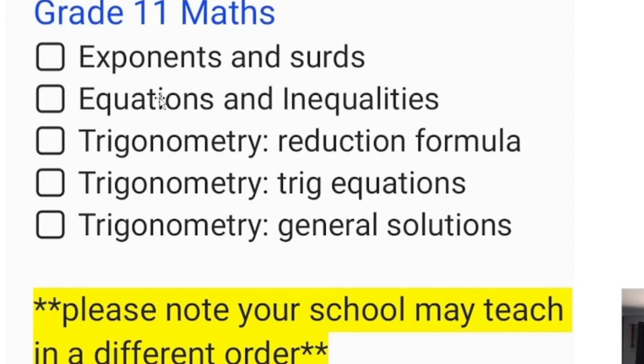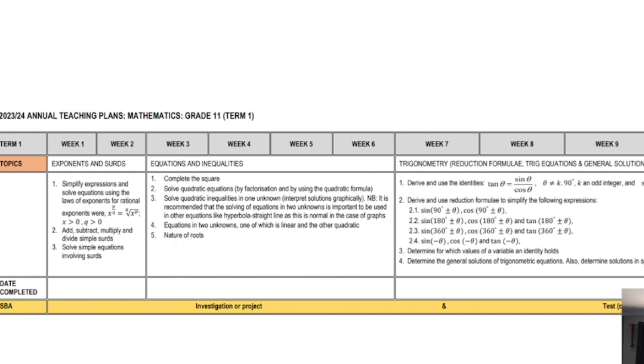You've got equations, inequalities, exponents. So it's algebra, a lot of algebra, there's surds, inequalities, and then you've got trigonometry. And this trigonometry is quite a bit more complex than grade 10 trigonometry. Again, we have the ATP document that goes into more detail. You can find that linked down below in the description. Same thing for grade 10, linked down below in the description to access this full document.